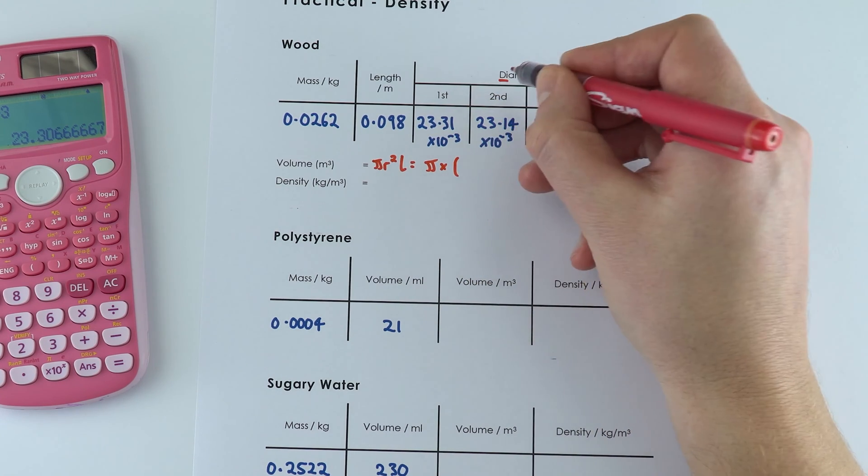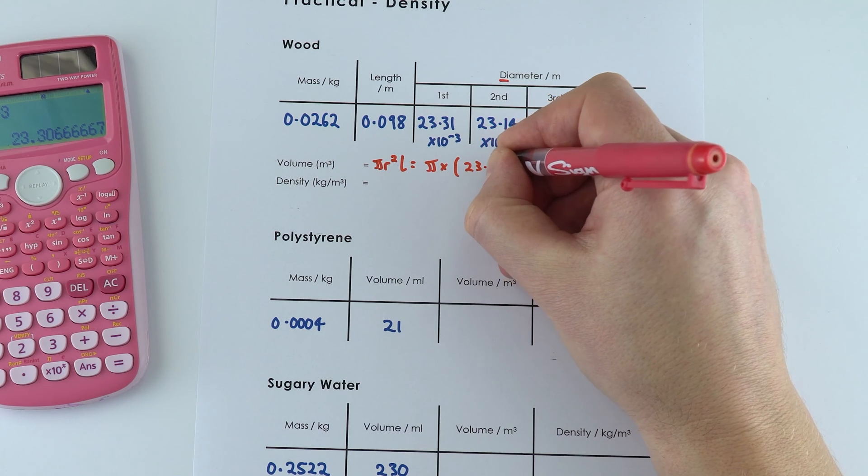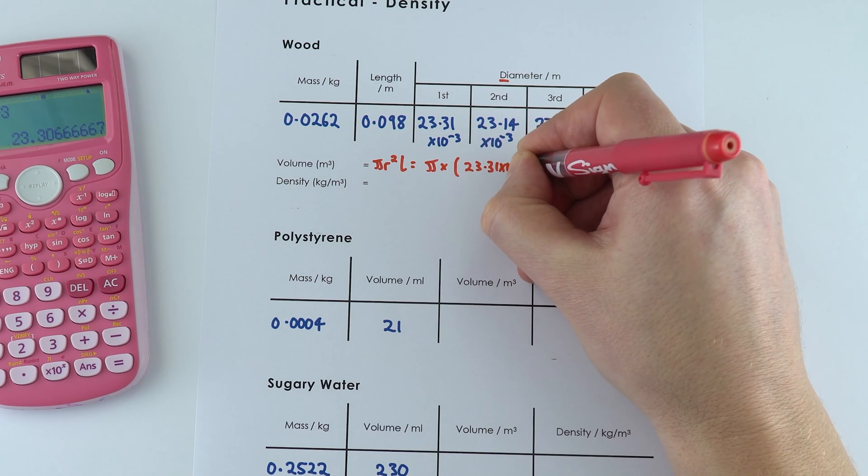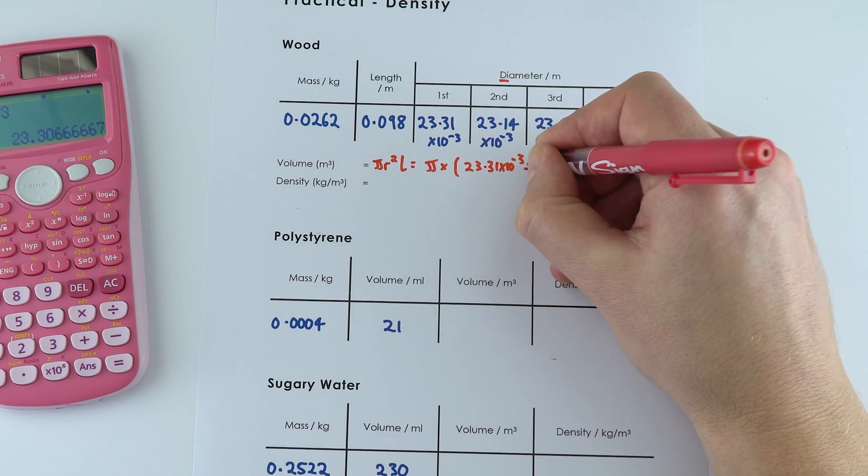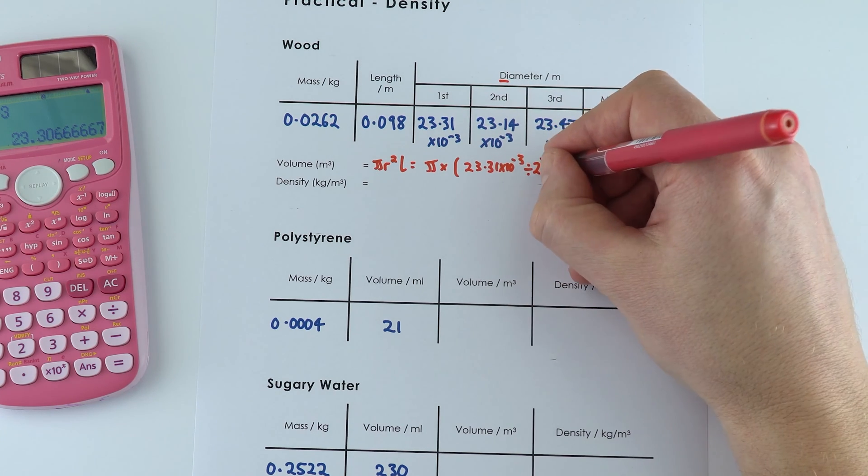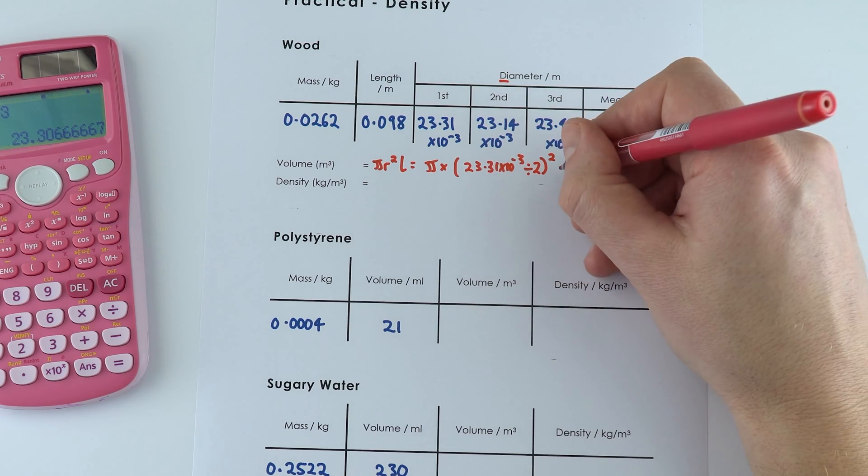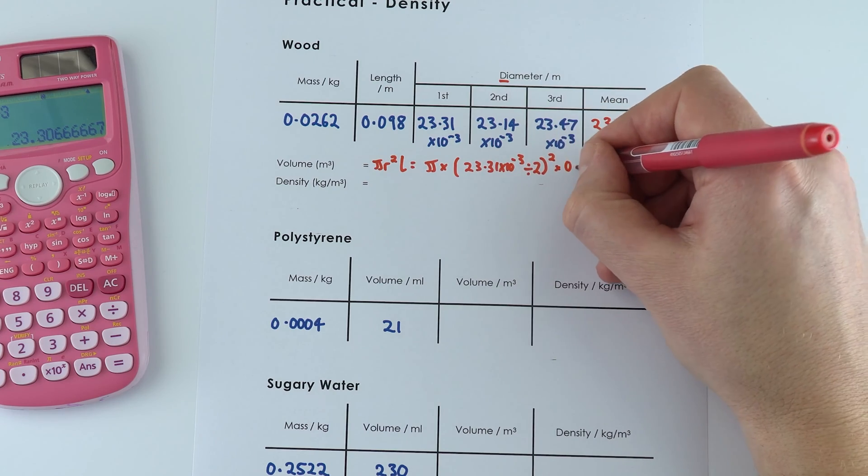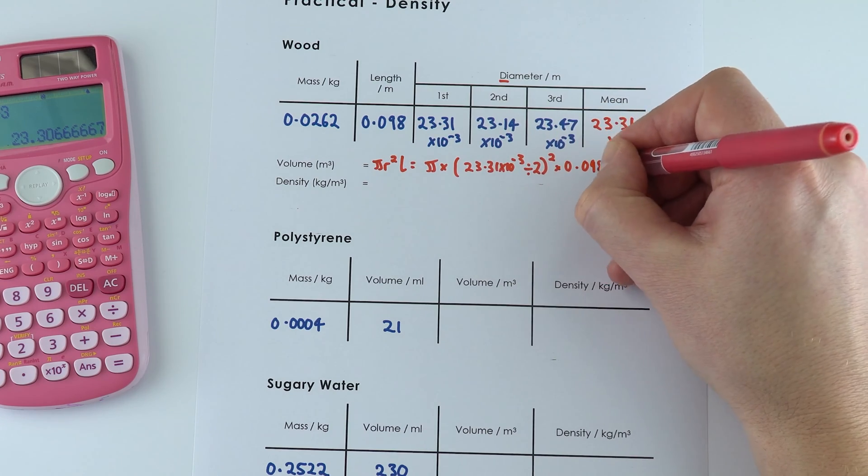Now up here we have the diameter, so the radius is going to be equal to 23.31 times 10 to the minus 3 divided by 2 because half the diameter is the radius. That's going to be squared and then we're going to multiply that by the length which is 0.098 of a meter.